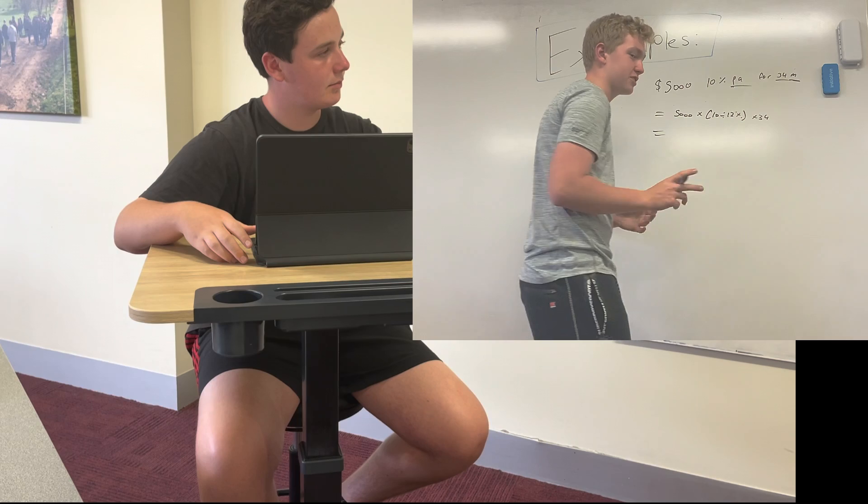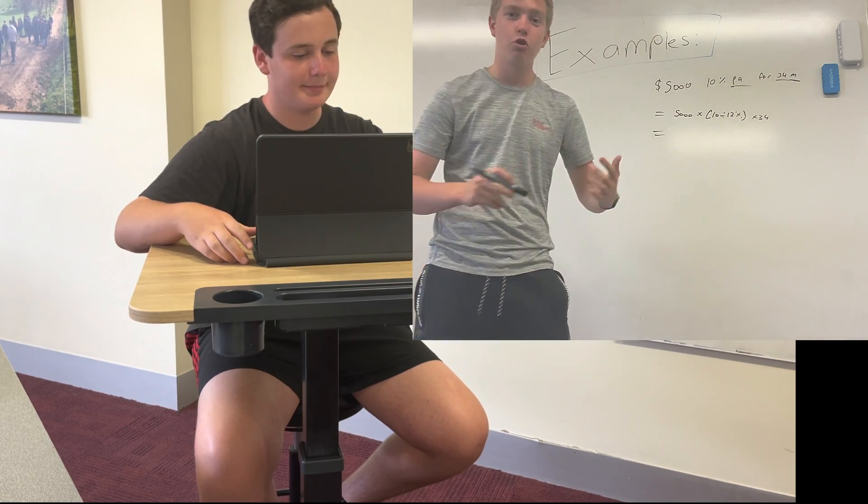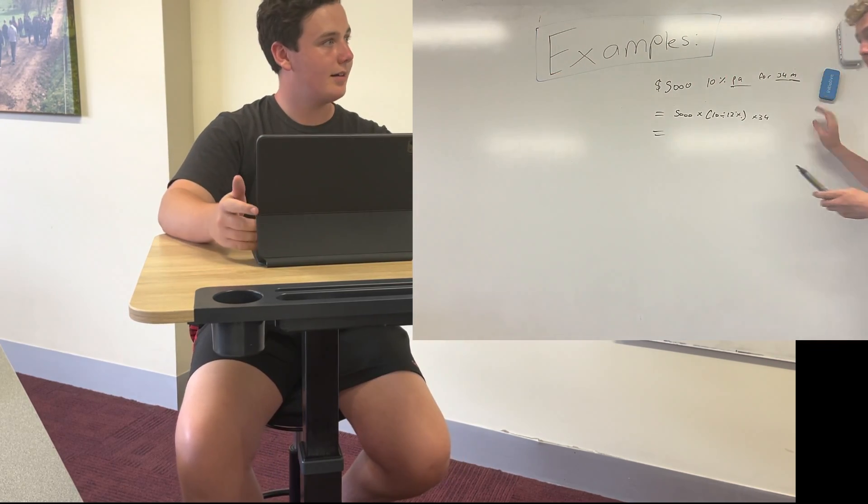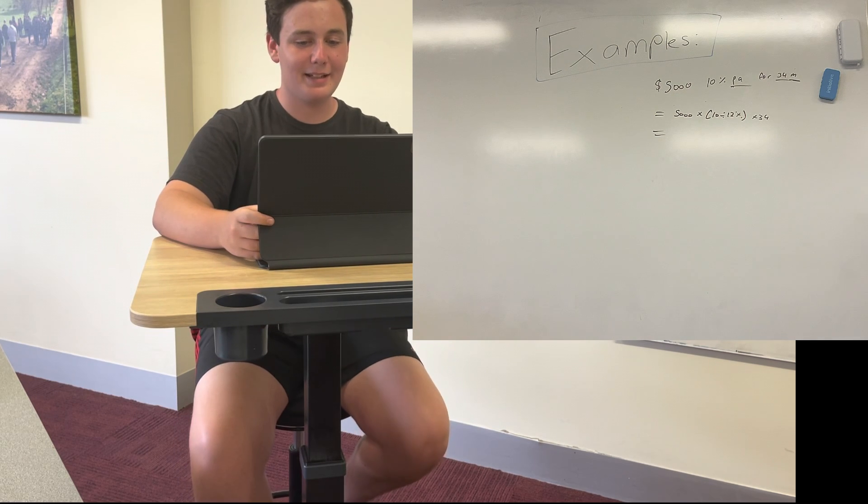And then times 34. Because to get 10% per annum into monthly we're going to have to divide it by 12. So that will again give you some sort of answer which I'm not going to be able to do now. You done? Yes. Okay good. I only fell asleep.